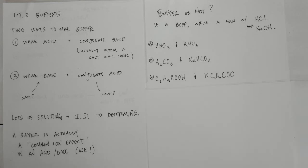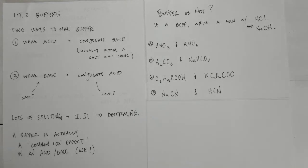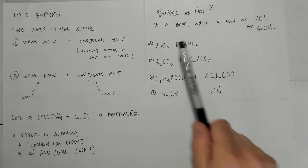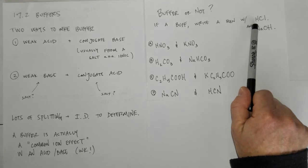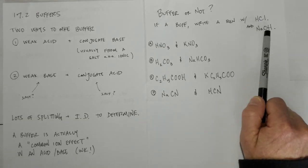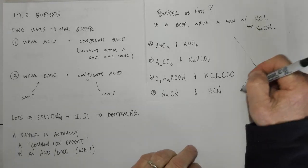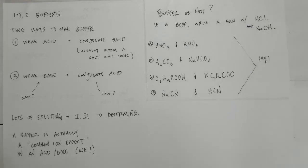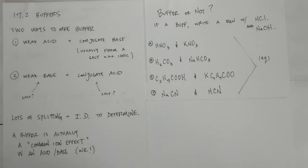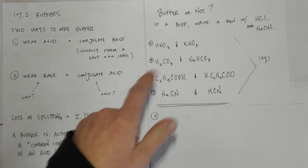Solution C: C2H5COOH and KC2H5COO. Solution D: NaCN and HCN. We'll answer two questions for each: first, is this solution a buffer or not? Second, if it is a buffer, write a reaction with HCl and NaOH. All solutions are assumed aqueous. If they're strong electrolytes, split them and look at their ions. Let's start with letter D, then work to a new page for C, B, and A.